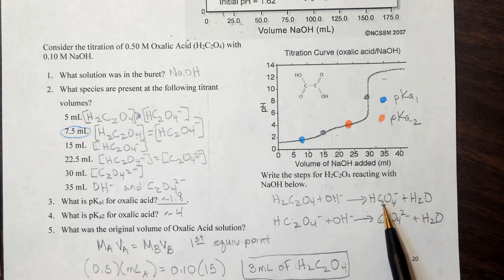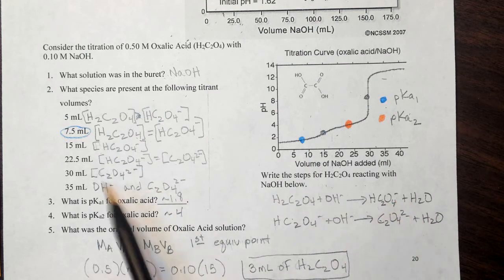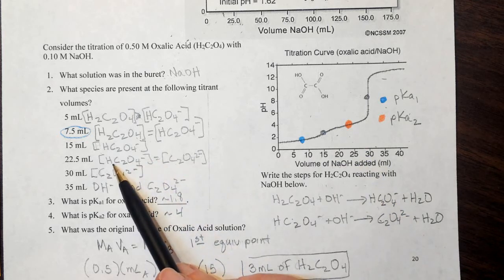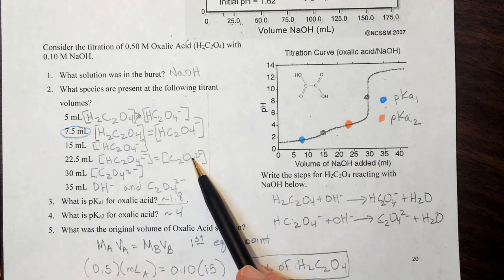At 15 mLs, that's the endpoint, so I should be just about done with this reaction here, so I should have only the monoprotic acid left. At 22.5 mLs, I'm at another half equivalence point, so I should have equal amounts of the monoprotic and the oxalate ion.